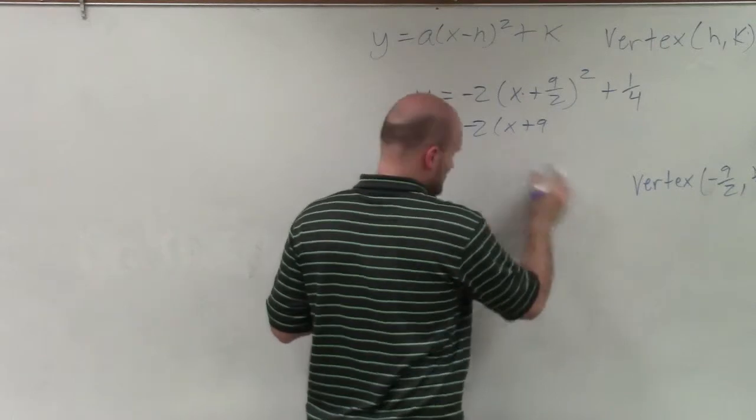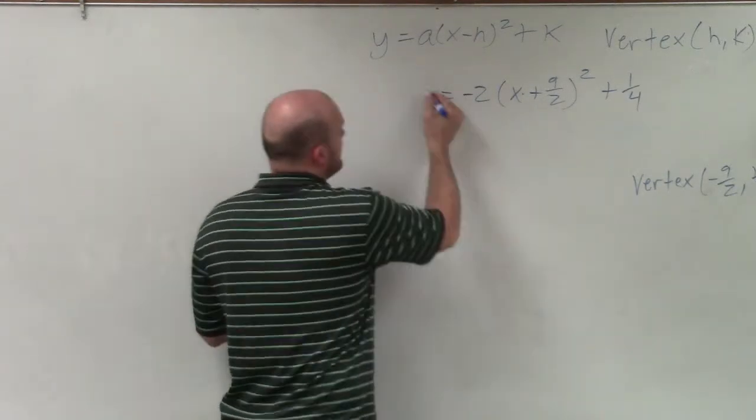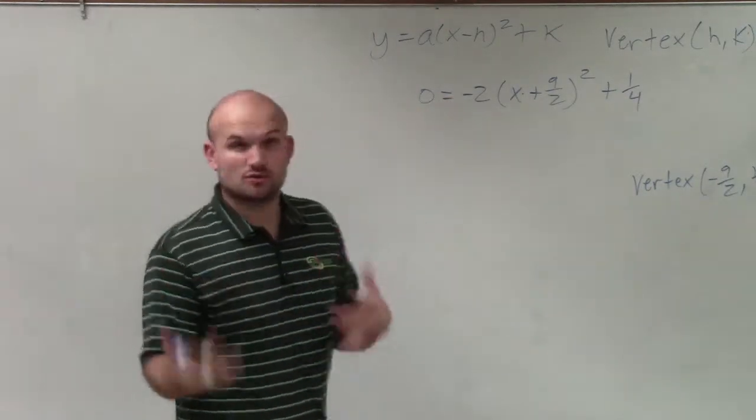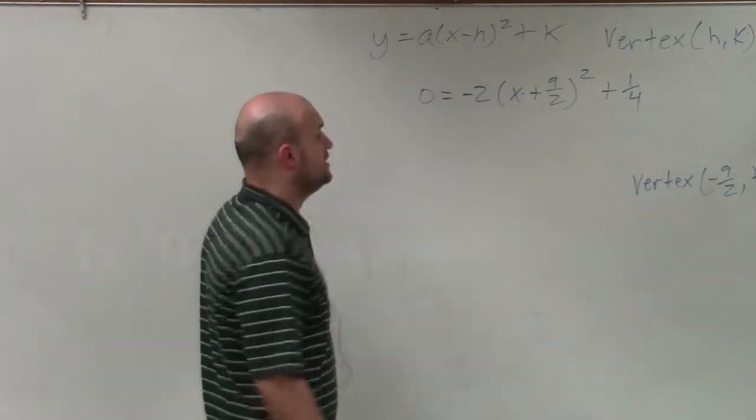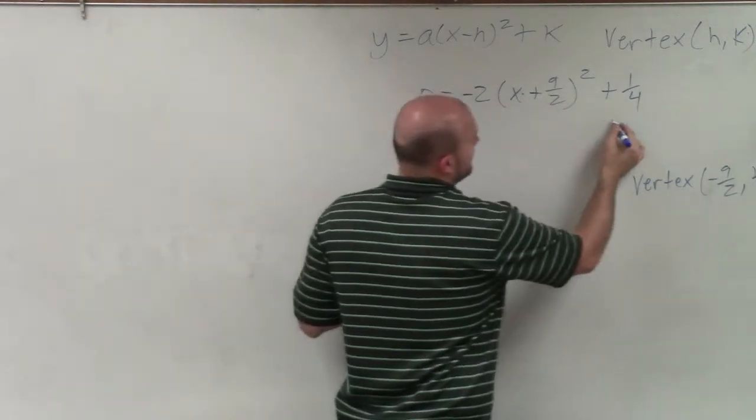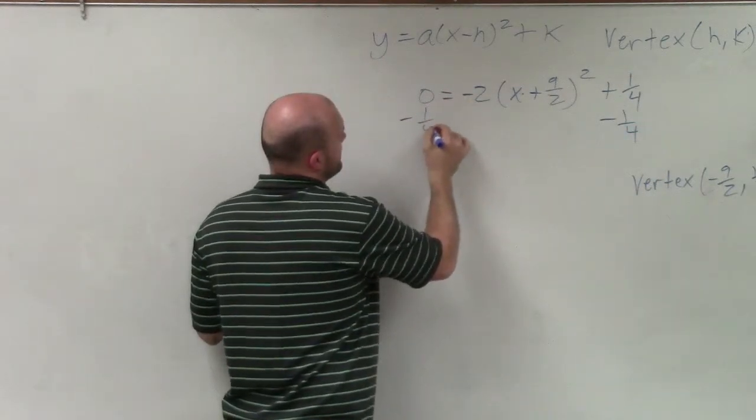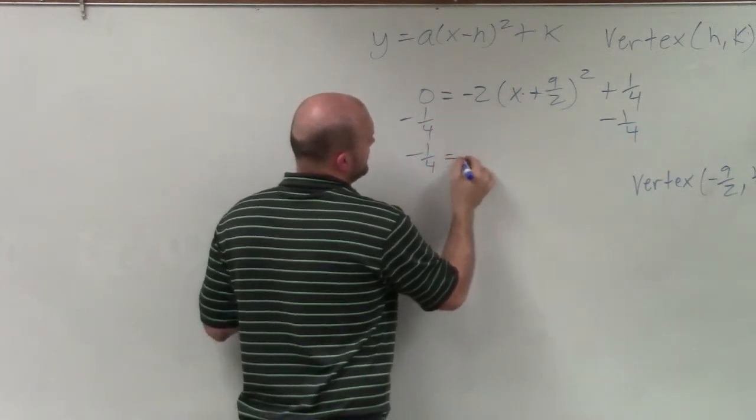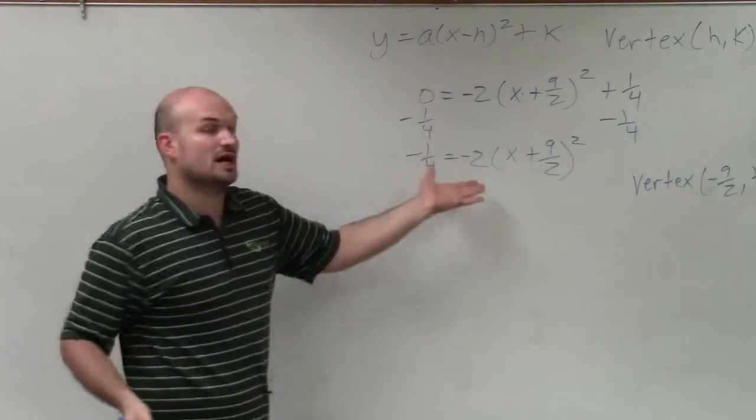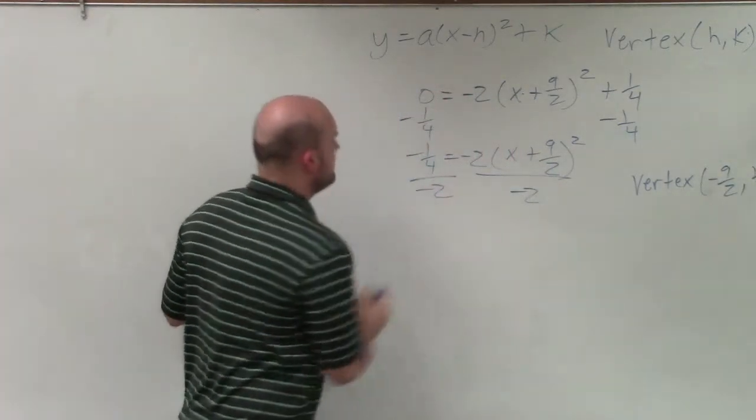And to do that, let's actually save some space and let's just put a 0 there. All right, so now to solve for x, I need to use my inverse operations. A lot of times, we call it the square root method. So to do that, I first need to undo everything that's happening to my square. So I subtract 1 fourth on both sides. So if I have negative 1 fourth equals negative 2 times x plus 9 halves squared, now I need to undo multiplying by negative 2. So I divide by negative 2 on both sides.